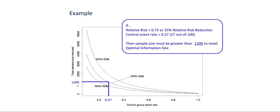For example, using the assumptions of an alpha of 0.05 and beta of 0.2, a relative risk reduction of 25% may be observed in the meta-analysis of a systematic review. If the control event rate were around 0.27 — indicated by the vertical red line — a total sample size of approximately 1,200 — indicated by the horizontal red line — would be required to meet the optimal information size. The optimal information size depends on the estimate of effect, the control group event rate, the sample size, and the alpha and beta error assumed.